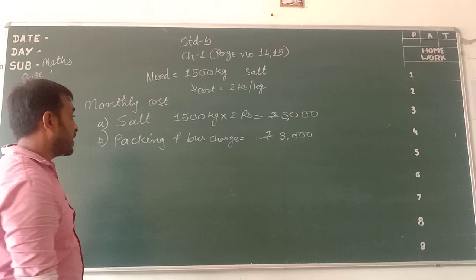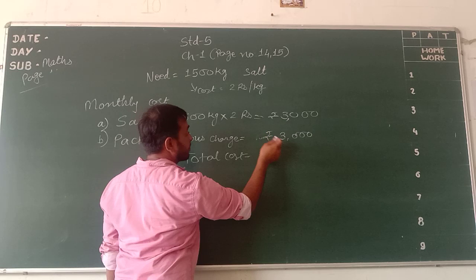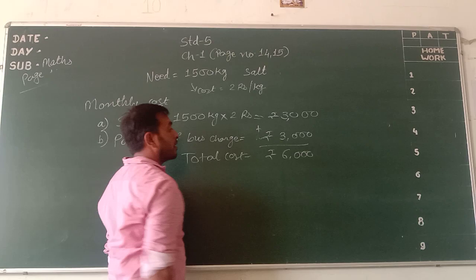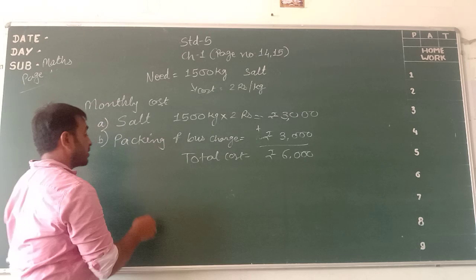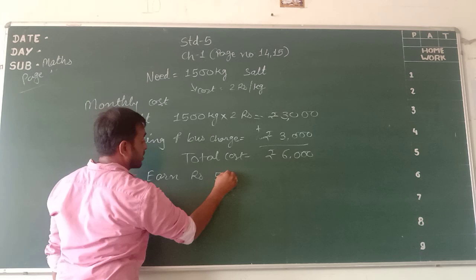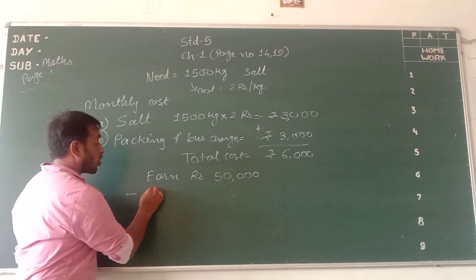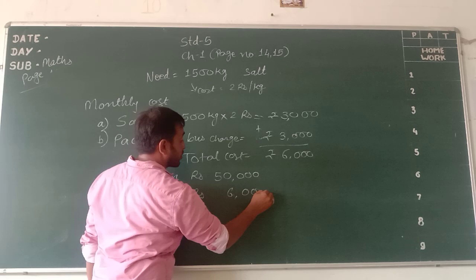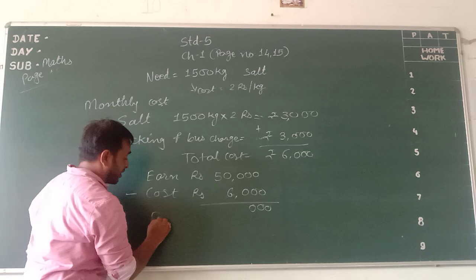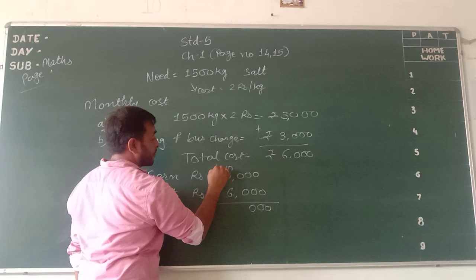So total cost is 3,000 plus 3,000, which becomes 6,000 rupees. They have 50,000 rupees profit from selling 6,000 kg fresh fish dried. So profit minus cost is 50,000 minus 6,000, and they will finally earn 44,000 rupees.